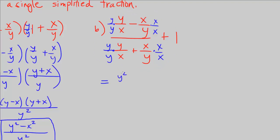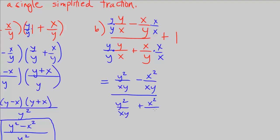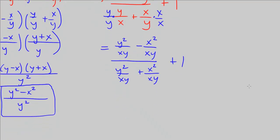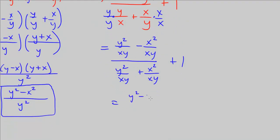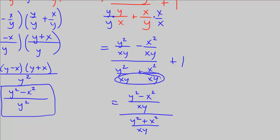So rewriting this, that's going to be y squared over xy minus x squared over xy, all over y squared over xy plus x squared over xy. Don't forget the plus 1 here. Finally, we're able to add the numerators — so we have y squared minus x squared over xy, divided by y squared plus x squared over xy.